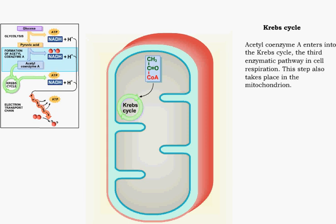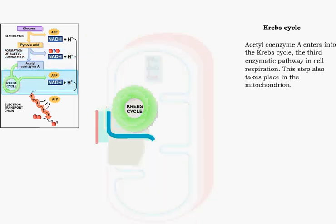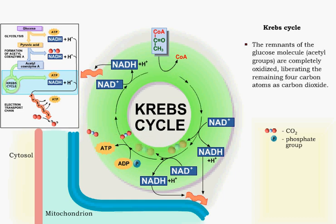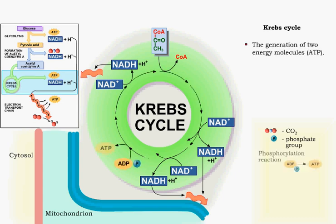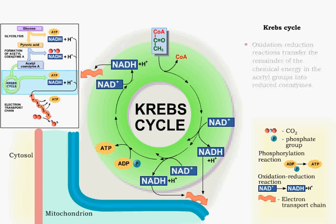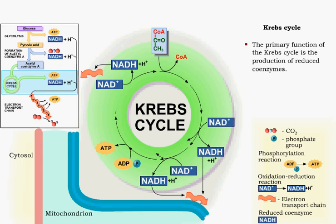The Krebs cycle takes place in the mitochondrion, as does the rest of aerobic cell respiration. During the Krebs cycle, the glucose molecule is completely oxidized. The four carbon dioxide molecules produced during the Krebs cycle, combined with the two produced during the formation of acetyl coenzyme A, bring the total to six carbon dioxide molecules produced from each glucose molecule. Two energy molecules are produced during the Krebs cycle. The remaining energy in the acetyl groups is transferred to reduced coenzymes. The primary function of the Krebs cycle is the production of many reduced coenzymes, and it is in these molecules that most of the energy harvested from the original glucose molecule now resides.